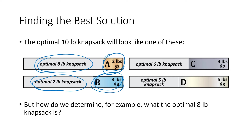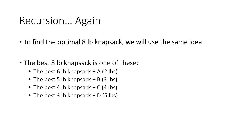This begs the question of how we find these optimal smaller knapsacks. We're going to use recursion again. For the optimal 8-pound knapsack, the best approach might be to take the best 6-pound knapsack and add an A (since 6 + 2 = 8), or take the best 5-pound knapsack and add a B. Whichever of these options has the biggest dollar value will be the best 8-pound knapsack, and then we can add an A to that and compare.